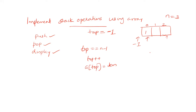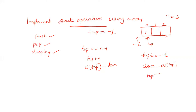Moving into the pop operation: if top equals minus one, we can say the stack is empty. If the stack is not empty, we get the element at the top pointer location. After deletion, top becomes minus one again. For each element removed, top is decremented by one.